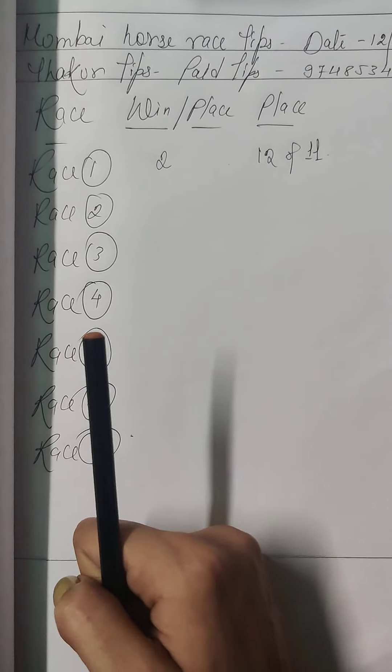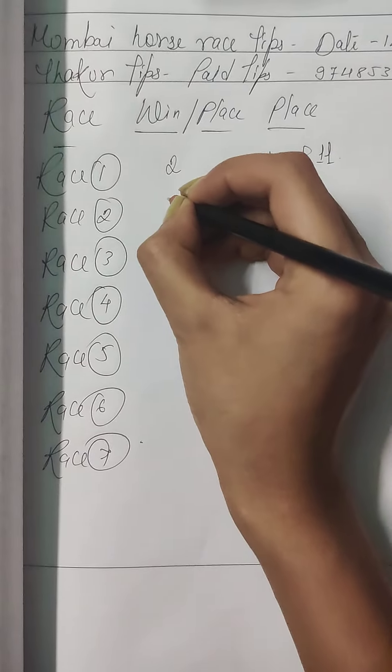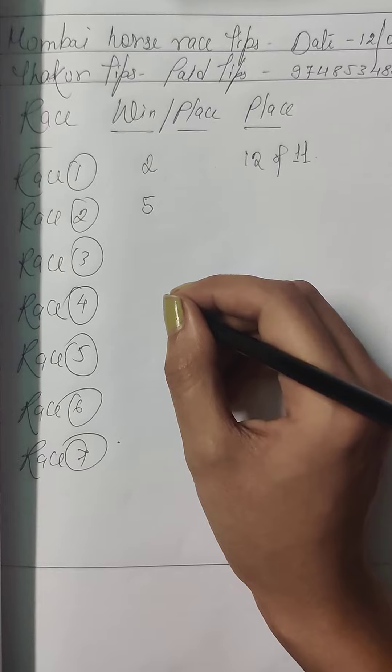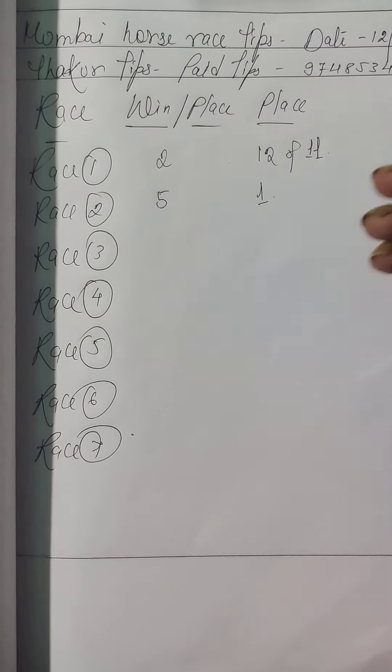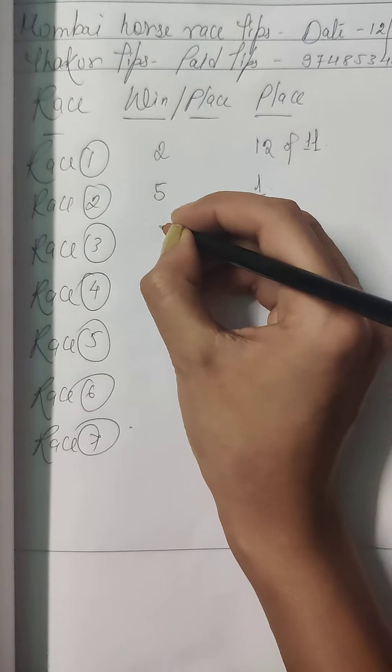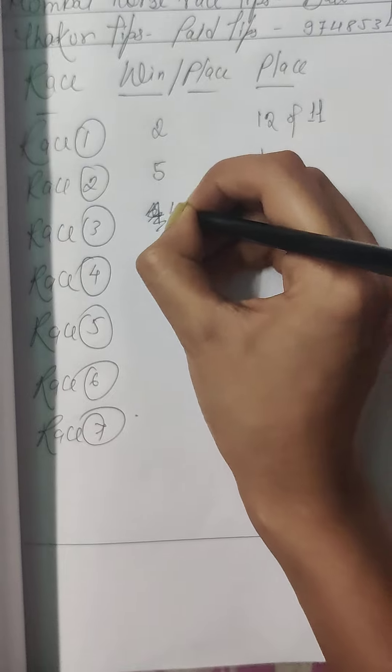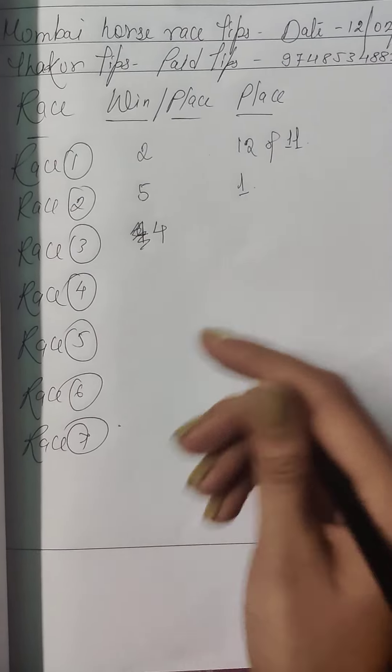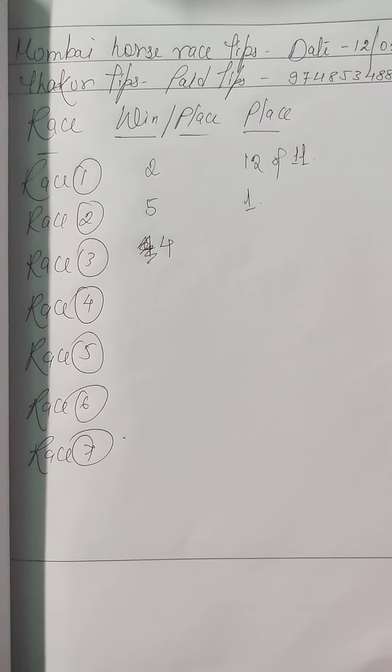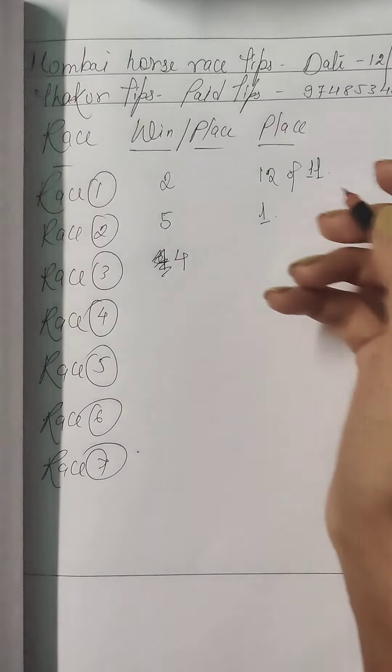In race number 2 my first choice is horse number 5. My second choice is horse number 1, my second choice is horse number 3, and my third choice is horse number, sorry 4. My second choice is horse number 2.